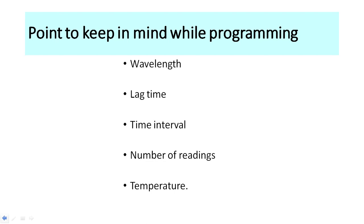Key points for performing a kinetic test: the wavelength is 340 nanometers. There is a lag time, which must be fixed as per the kit manufacturer's instructions. The time interval is the gap between successive readings, and the number of readings must also be set. Temperature is critical because enzymes are very sensitive to it — the kit specifies at what temperature the test should be performed.